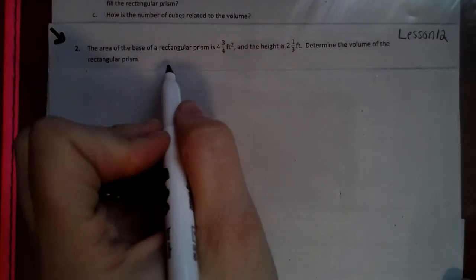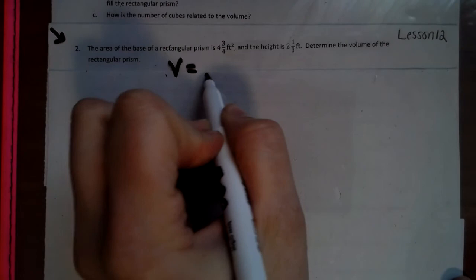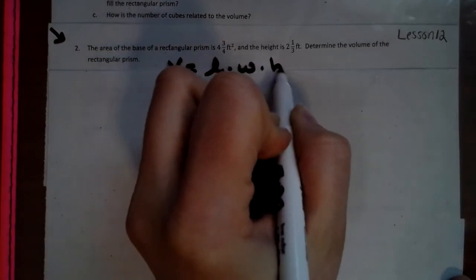After everything is all said and done. Now, that one wasn't as bad as what some of them can be. But here we go. This one's a little different. This one we have volume equals length times width times height. Now follow me here.